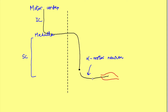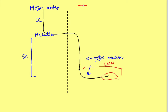It synapses at the level of the spinal cord, and from there another neuron arises — the alpha motor neuron — which supplies the muscle. Injury from the alpha motor neuron to the muscle is a lower motor neuron injury, while injury from the motor cortex, internal capsule, or medulla down to where the first neuron synapses is an upper motor neuron lesion.